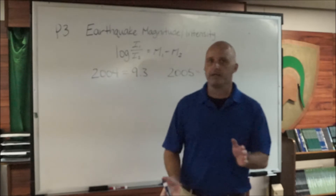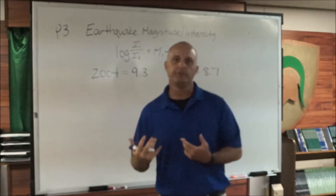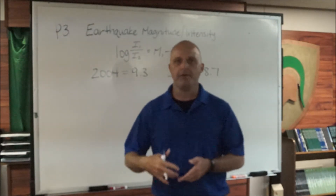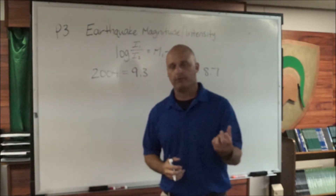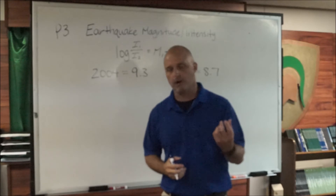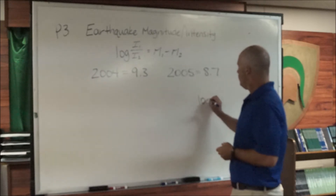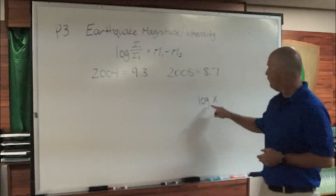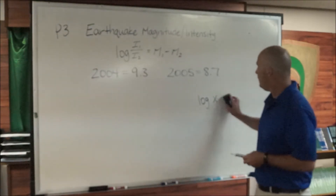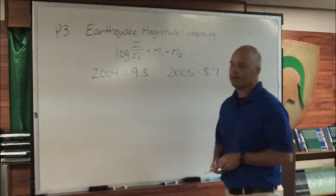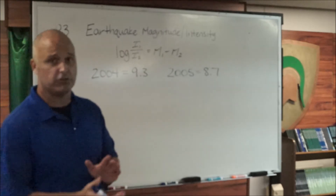One of the rules you've become accustomed to throughout math is that if you don't have a number in certain places, it's assumed to be a particular number. If you don't have a number in front of a variable, it's assumed to be 1. If you don't have a number in the index of a radical, it's assumed to be 2. Well, with a logarithm, if we have log of x and we don't have a base, that base is assumed to be 10. That's what we call a common log.